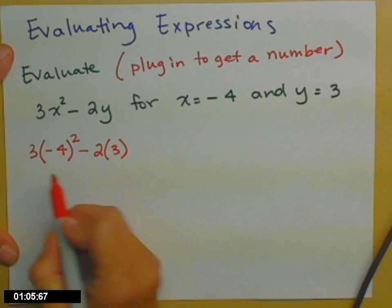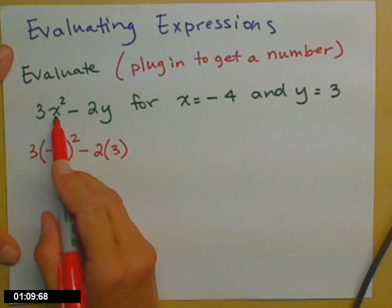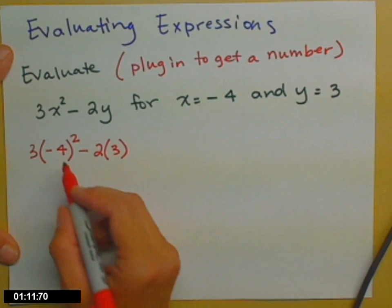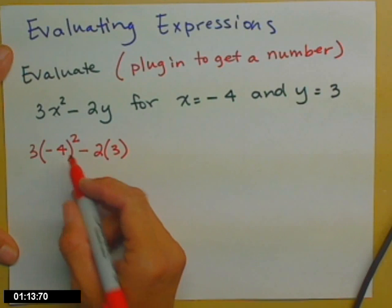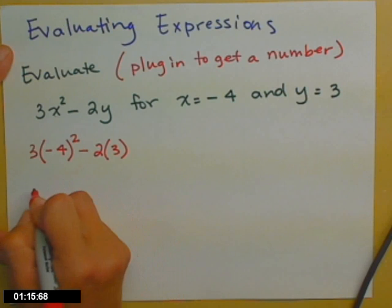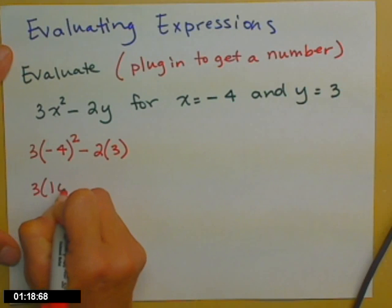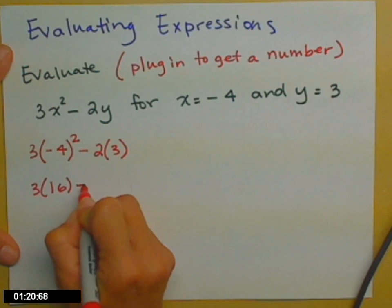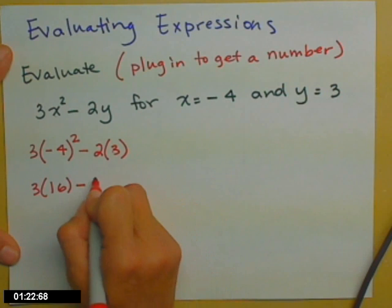Now we have to remember our PEMDAS. I have negative 4, it's in parentheses, because it's that whole x that's being squared, so negative 4 times negative 4, the two negative signs make a positive 16. So now I have 3 times positive 16, minus 2 times 3.